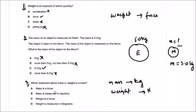Mass is a force — not correct. Mass is measured in newtons — no. Weight is a force — yes, weight is a type of force, that's correct. Weight is measured in kilograms — no. That's why option C is the right answer.